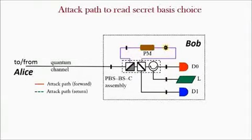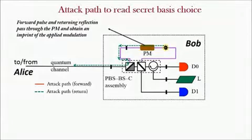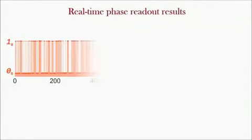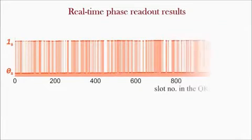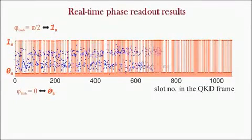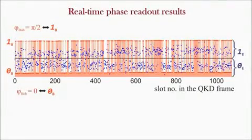We demonstrated that the secret basis choice in Bob can be discerned in real time with almost 100% success probability. In this graph, the red trace shows the random binary modulation of Bob and the blue trace shows the measurement outcomes of Eve. One can see they are highly correlated.